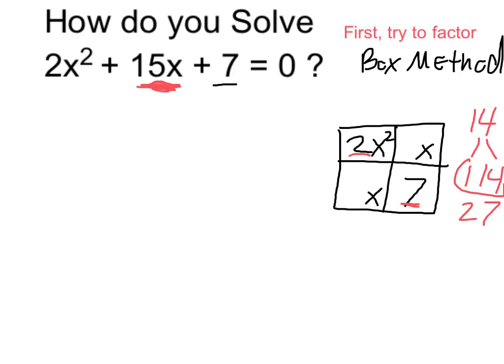Next thing I do in my box method is I put my 1 and 14 in either of these places. It doesn't matter which one goes where. And what I'm going to do next is go through and I'm going to factor all the rows and columns.